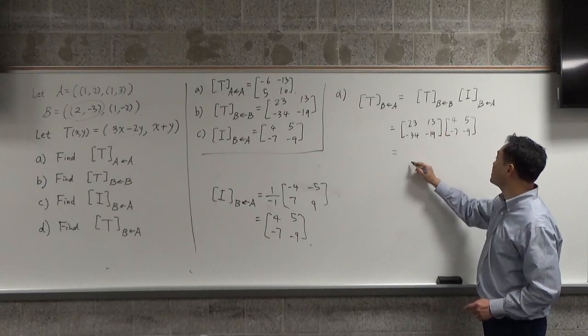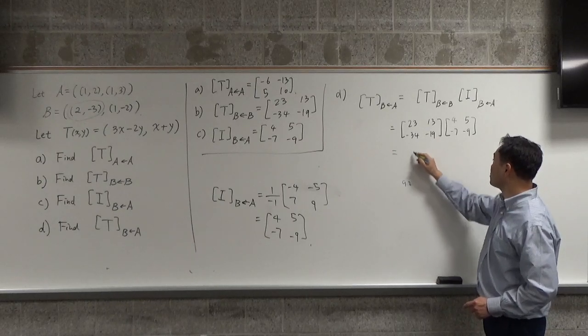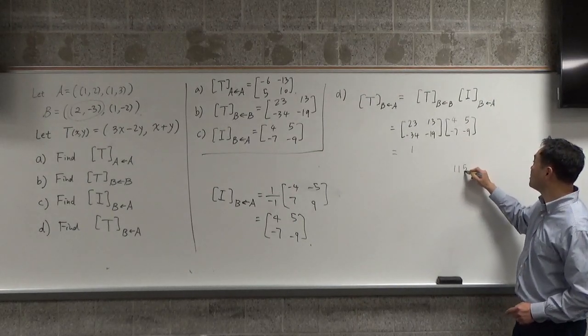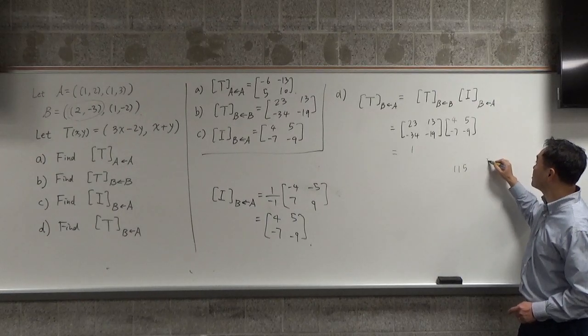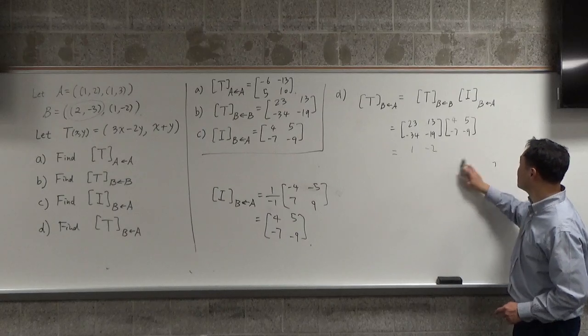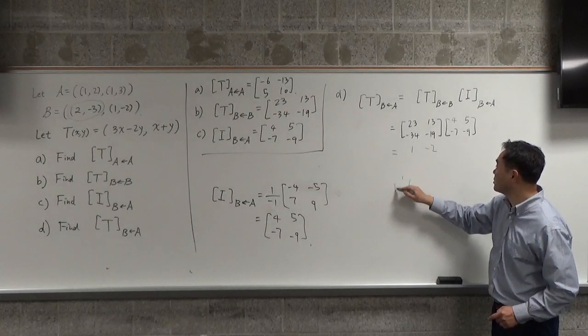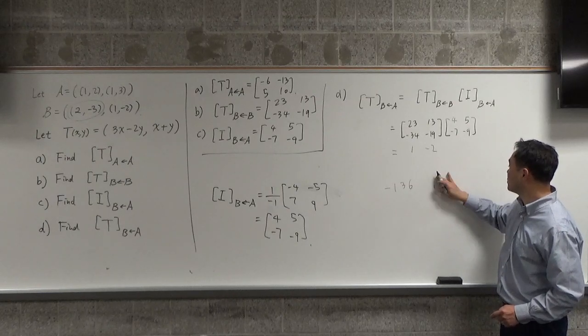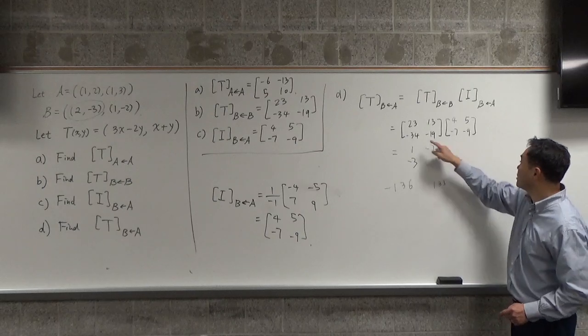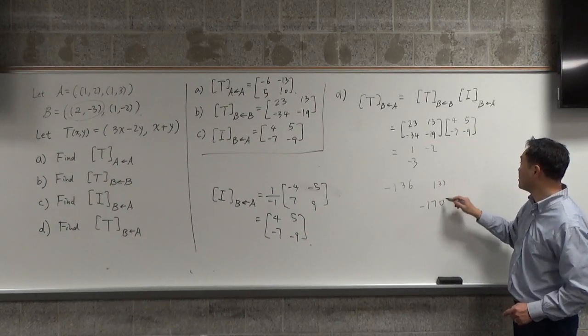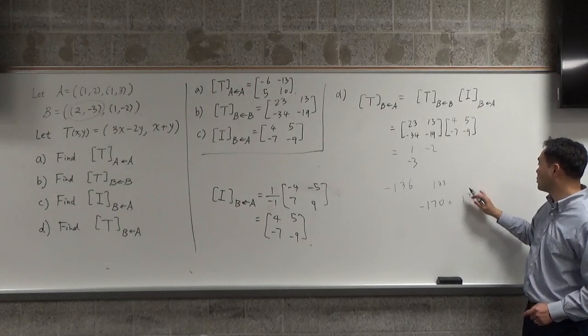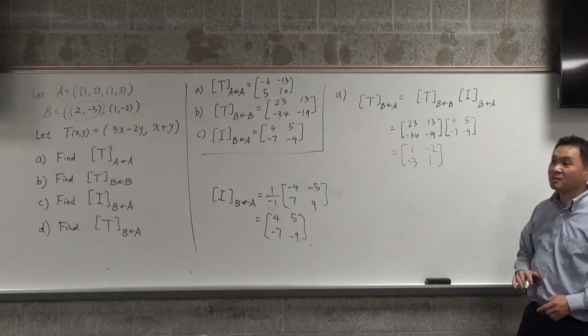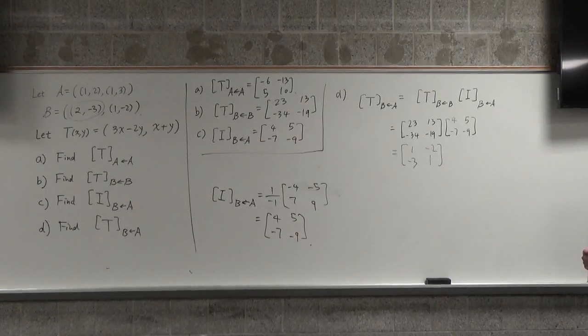So, I just need B to B, which is 23, 13, negative 34, negative 19, multiplied by this matrix that had the answer C. So, that would be 4, 5, negative 7, negative 9. So, that would be 92 plus 119... let me compute carefully. This times this would be 92 minus 91, so it would be 1 here. And then, this times this would be 115 plus 2, 117, minus 119 will be negative 2. And then, 136 with a minus, 133, so it's plus, so it's negative 3 here. And then, this times this would be negative 170 plus 171, so it would be 1. So, that's what you get.